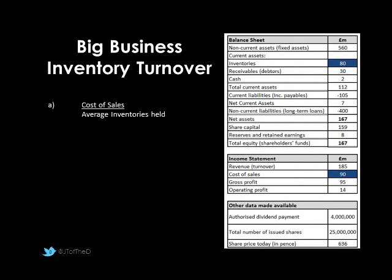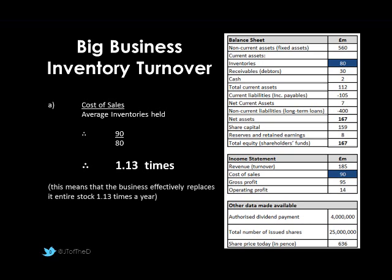Let's consider the inventory turnover for big business. The figures highlighted in blue are the inventory value of £80 million and cost of sales of £90 million. In our formula, cost of sales goes on top and average inventory held is on the bottom. The average assumes that at the balance sheet date, it was a typical amount of stock held. Substituting the numbers in — £90 million divided by £80 million — gives us 1.13 times. Don't put all those zeros for millions; just simplify it to avoid errors.